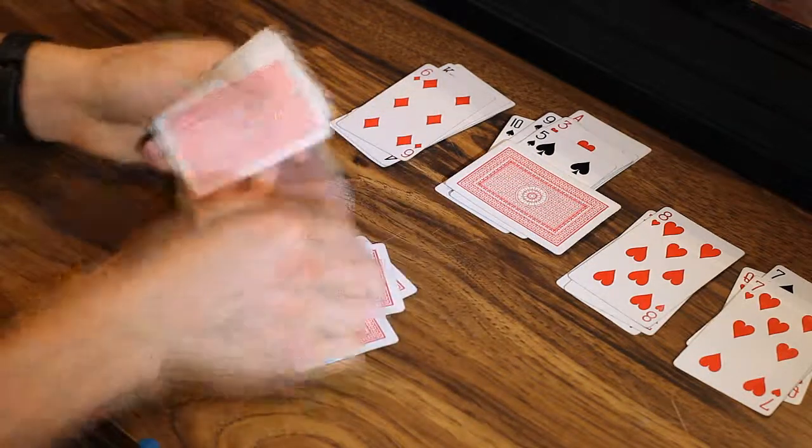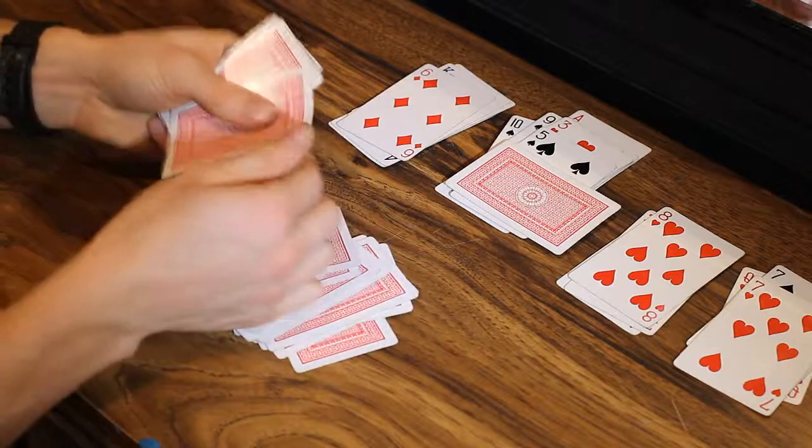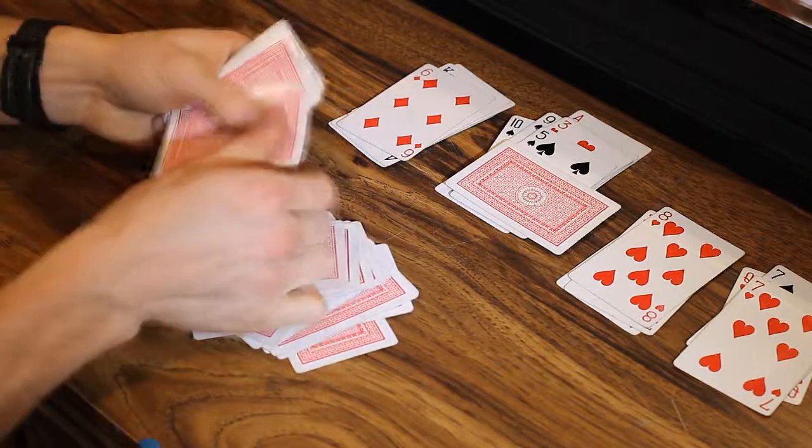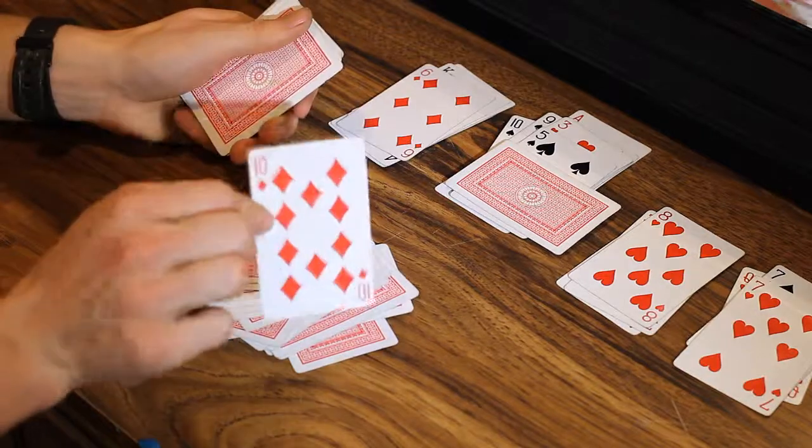So, one, two, three, four, five, six, seven, eight, nine, ten, eleven, twelve, thirteen, fourteen, fifteen, sixteen, seventeen, eighteen, nineteen, twenty, and the twenty-first card will be yours.